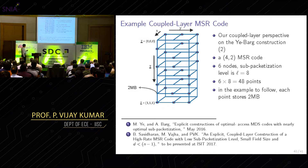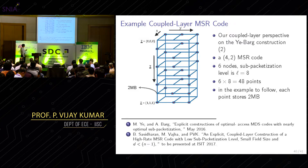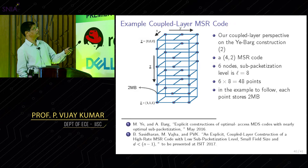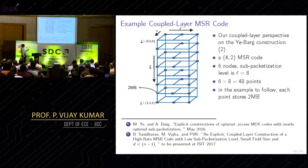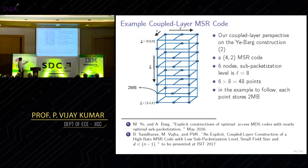I'll show the functioning of the coupled-layer MSR code. This construction appeared roughly two months apart between our group and the Ye-Barg team — they were first. We teamed up to evaluate these codes and subsequently went further with this class. We're looking at a (4, 2) MSR code: four data blocks and two parity blocks. This looks complex, but each element here is a data storage node. There are six nodes total, and each node stores eight symbols — the sub-packetization level is eight.